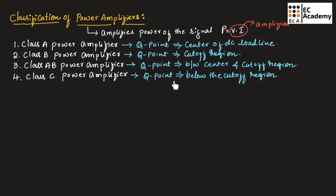In class C power amplifier, the Q point is below the cutoff region. So, depending upon the location of the Q point on the DC load line, we can classify the power amplifiers into different types.